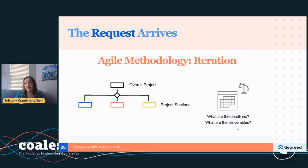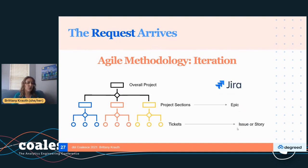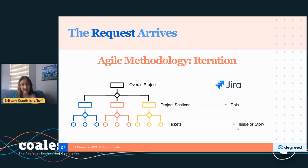Agile methodology is something your analyst is probably not very familiar with, but they're probably already doing it a little bit. I'm just going to focus on sprint work and iteration — taking an overall project and splitting it into smaller sections. We might say, hey, I know you want three dashboards, but we're going to do one at a time. We break projects out through JIRA into epics — maybe a section, maybe a version one and version two — and then break each epic into individual tickets and issues.